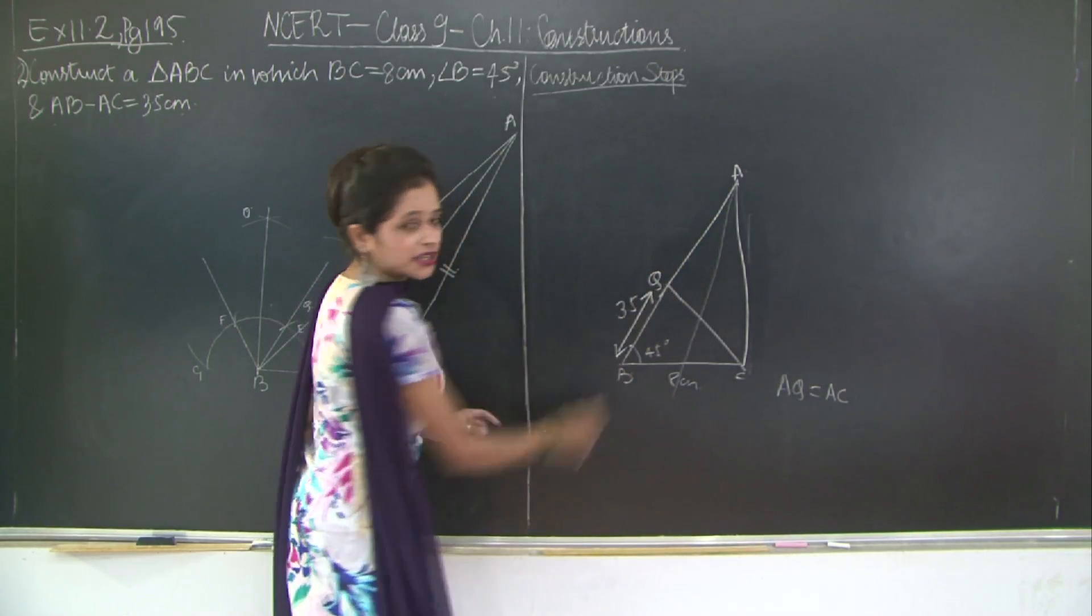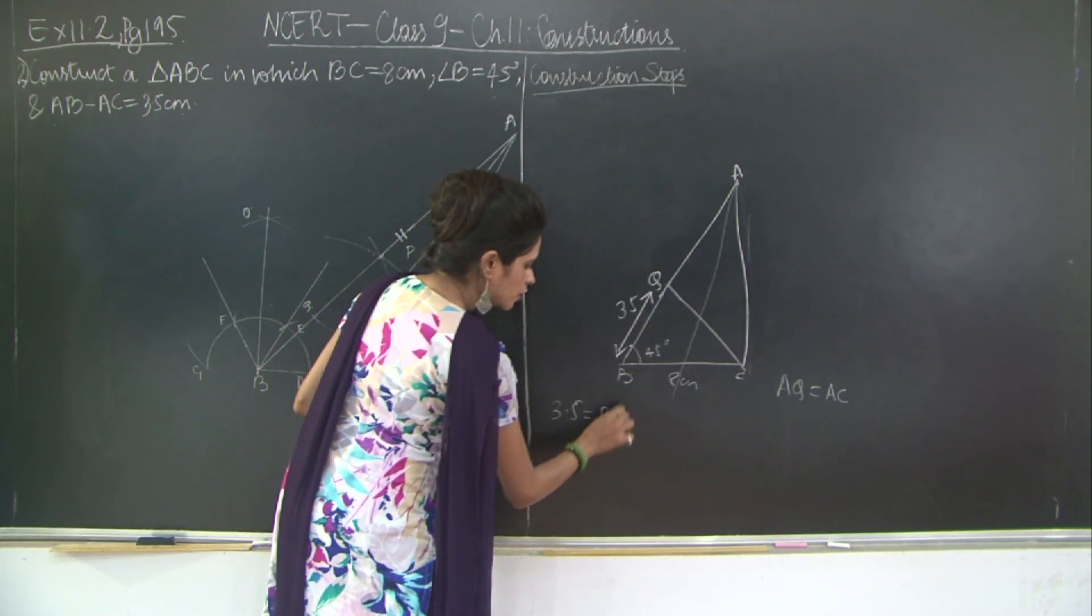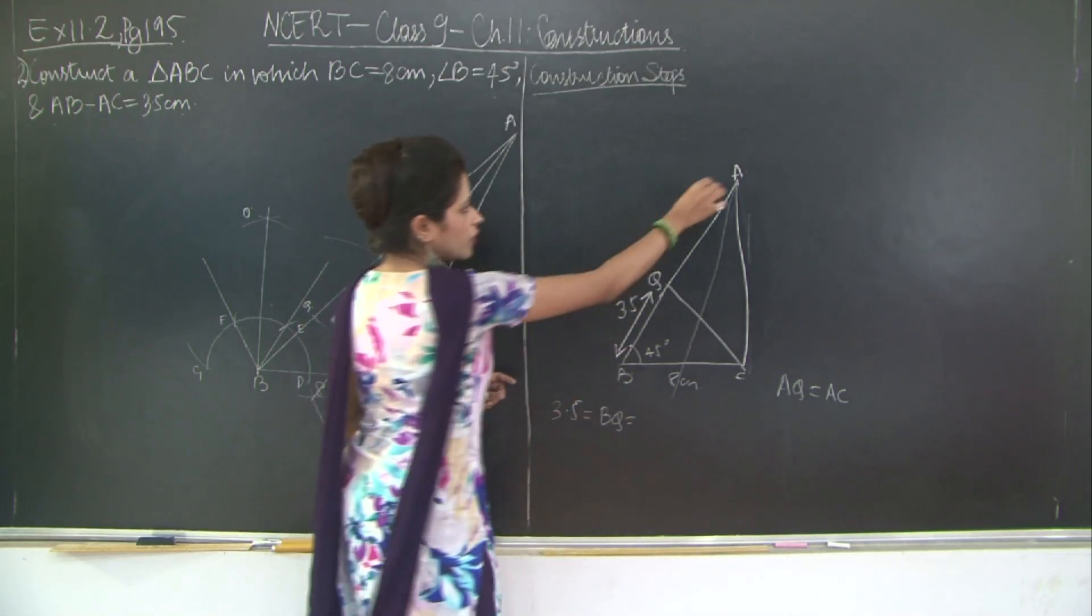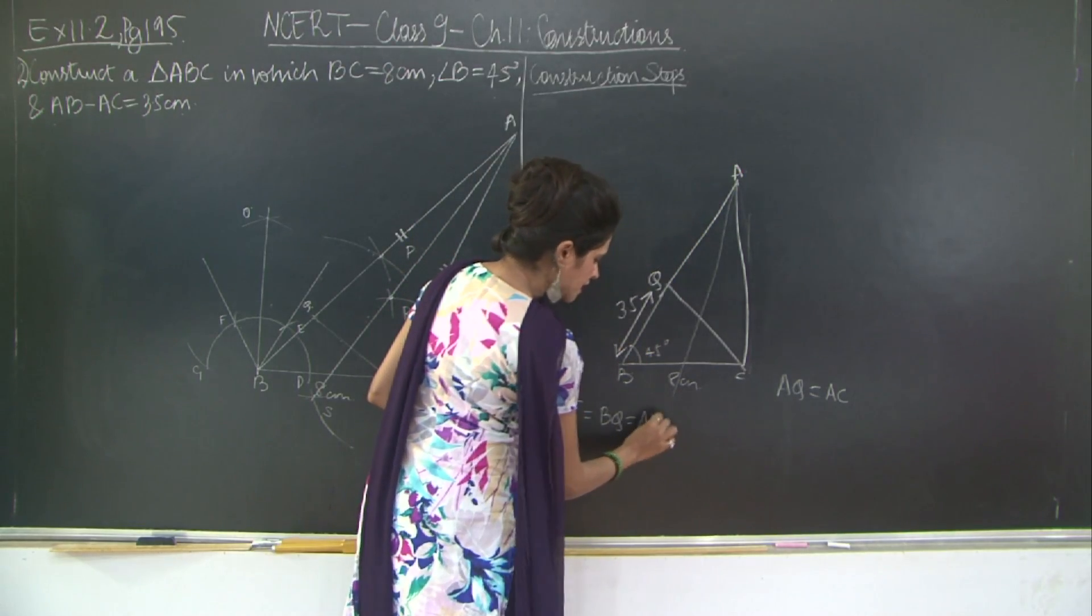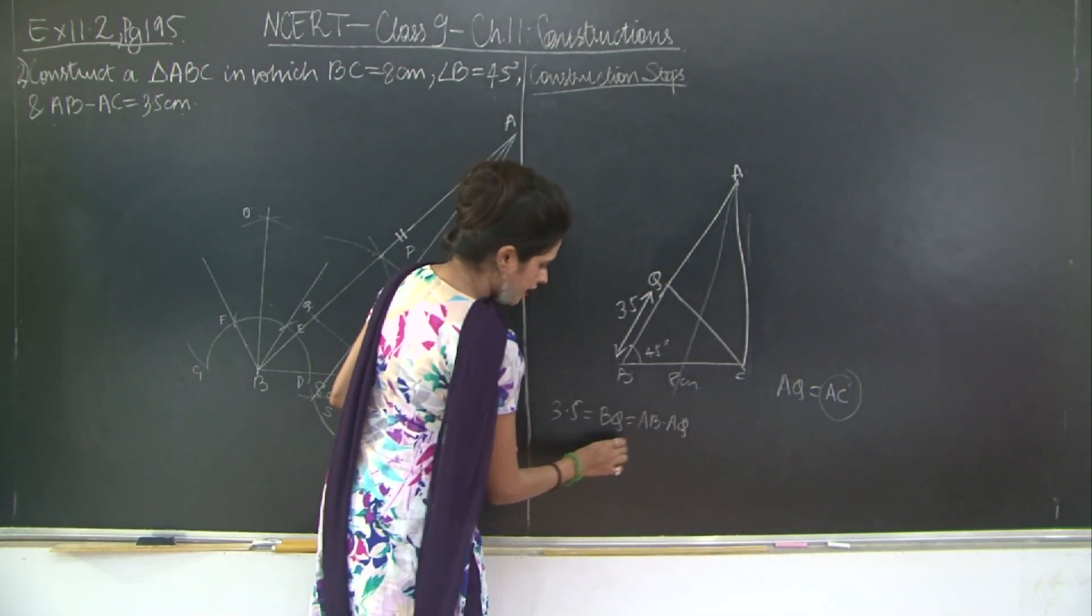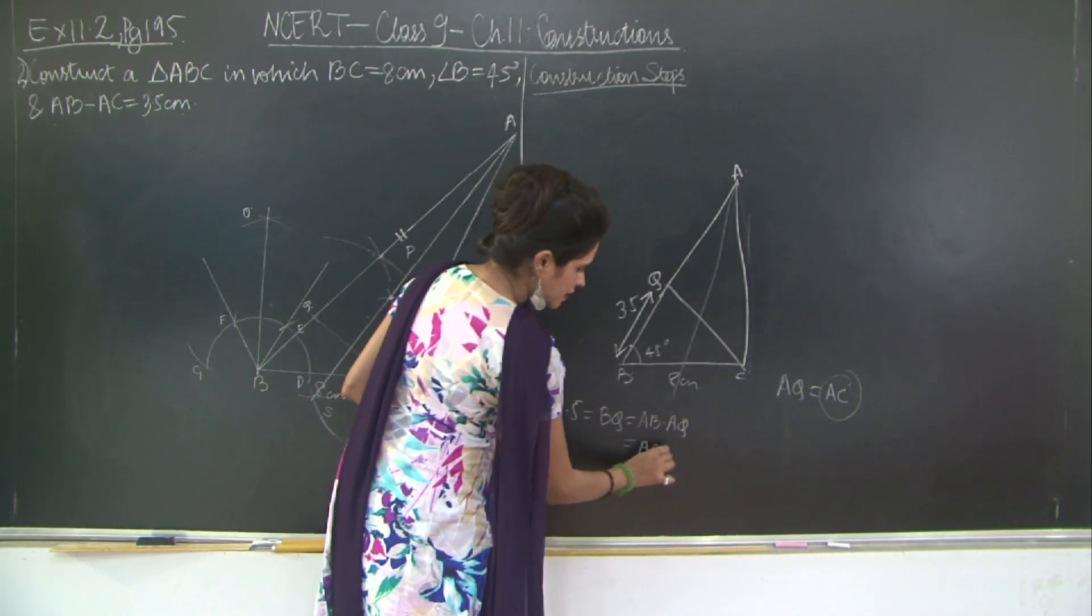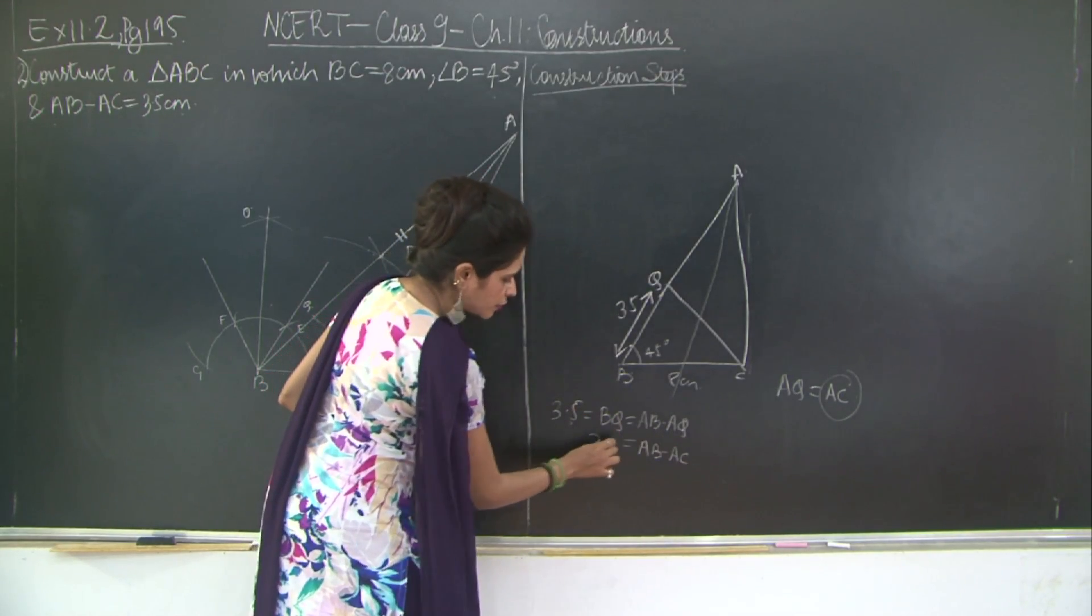Now what have we taken our length BQ as? 3.5 cm is equal to BQ, but BQ is made up how? It is AB minus AQ, correct? So this is AB minus AQ, but AQ is what? AQ is equal to AC. So I can write this as AB minus AC, and this is 3.5 cm.